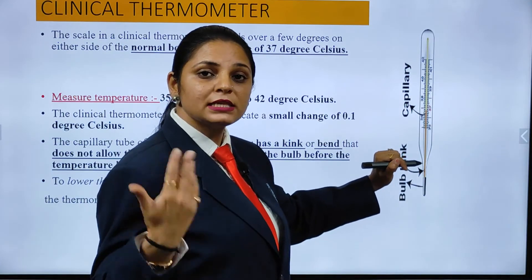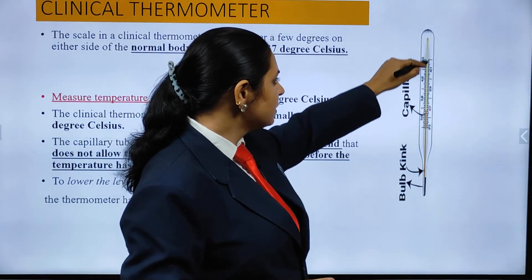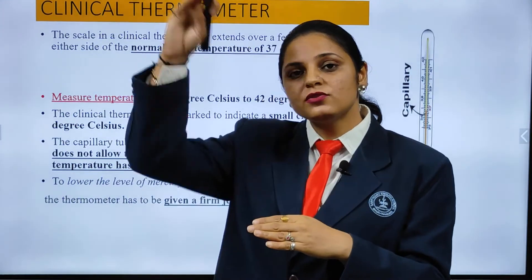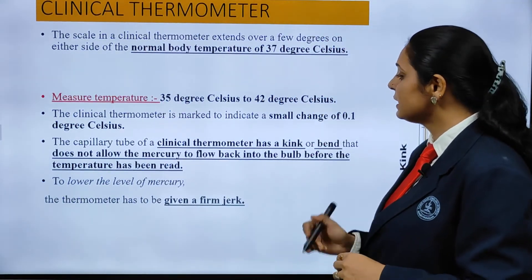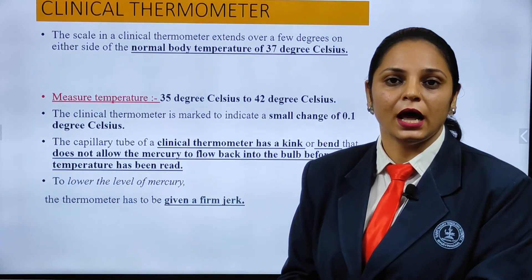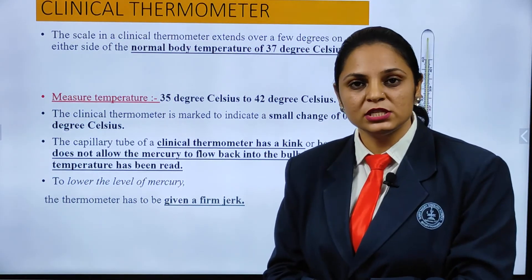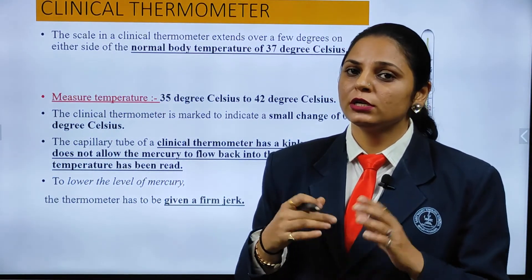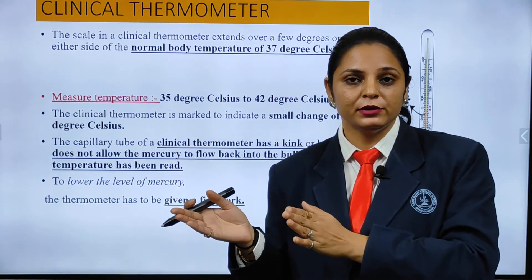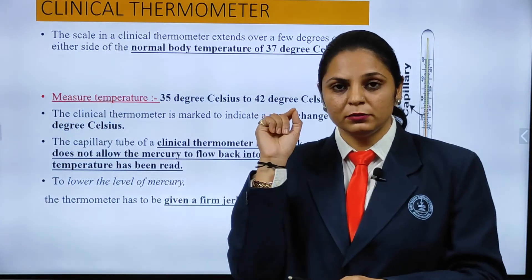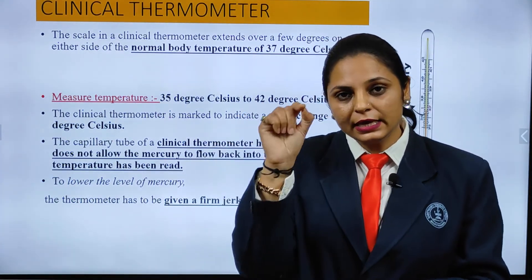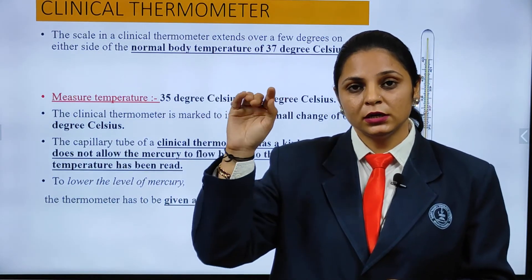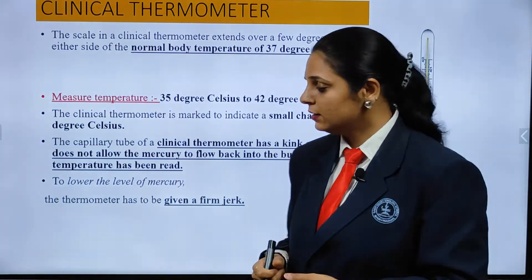As mercury gets heated, it rises in the capillary tube. The clinical thermometer has a kink — a bent constriction — which does not allow the mercury to fall back down when you take the thermometer out. This is compared with the laboratory thermometer, which has no kink. If the kink is not present, the temperature reading for a particular point would drop down immediately and we would not be able to record it.